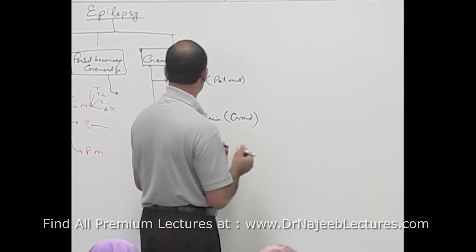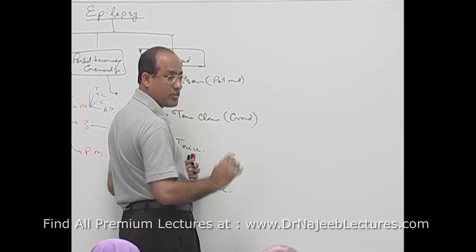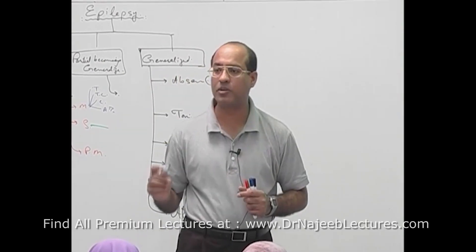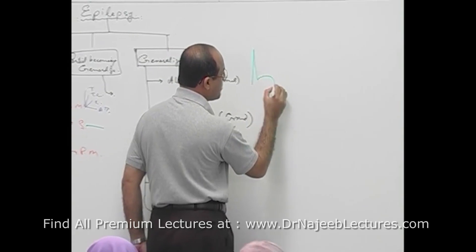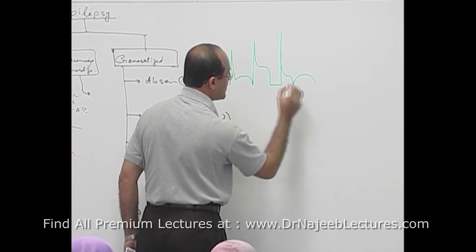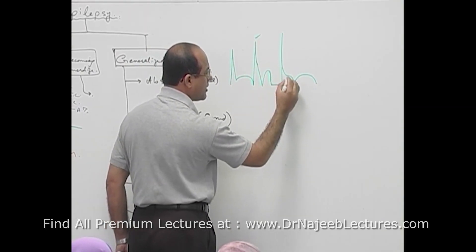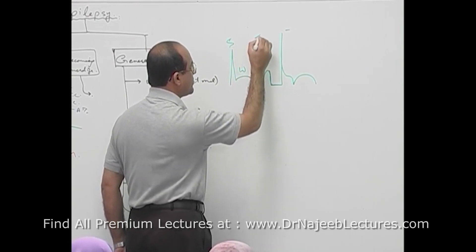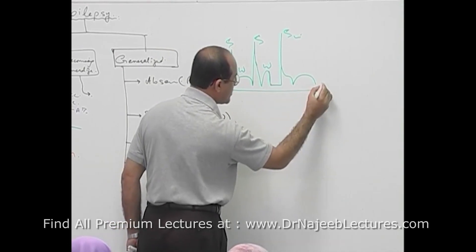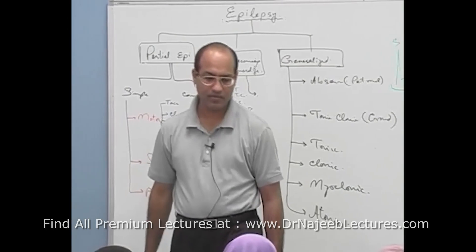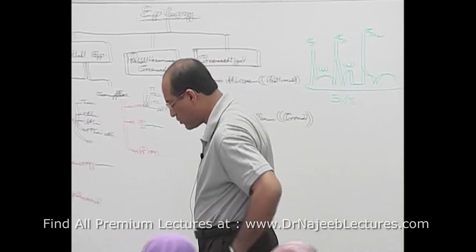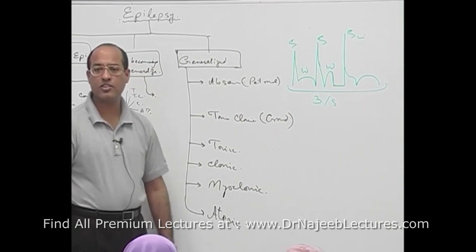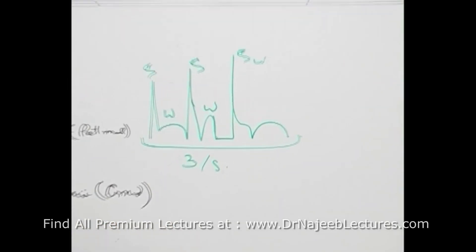Absence has one very special type of EEG pattern, and this is the only EEG pattern a good student should know. You are not supposed to remember all EEG patterns of every epilepsy, but absence is very characteristic. There is a spike and wave pattern — a spike followed by a wave, repeating at a frequency of 3 cycles per second. Because it is generalized epilepsy, this pattern must be on both sides.